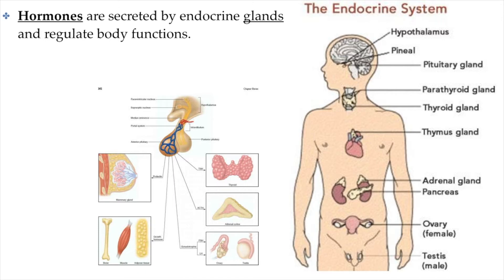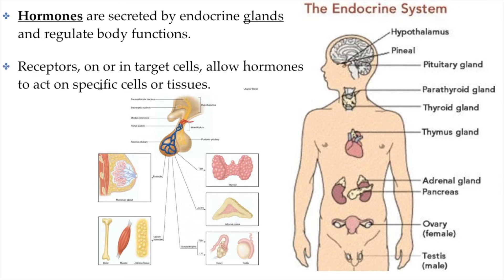One of the important things our body needs to do in terms of regulating the action of hormones is to make sure that only cells that need access to the effects of a particular hormone are affected by it. In order to do that, different cells in different body tissues have receptors for very specific hormones.